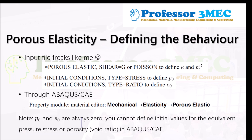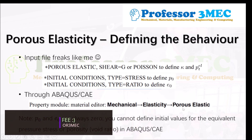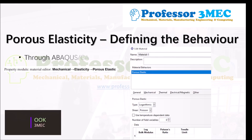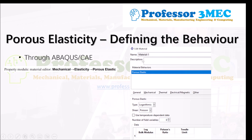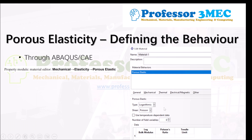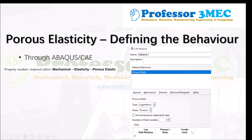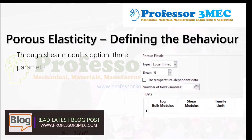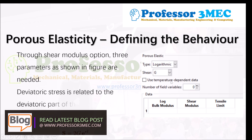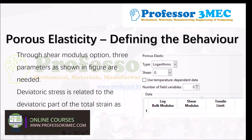To define porous elasticity through CAE: go to Mechanical → Elasticity → Porous Elastic in the material model. When you select this option, a window will pop up as shown on screen. You can define the material name and select porous elastic options. If you select the Poisson's ratio option, you need to define the logarithmic bulk modulus, Poisson's ratio, and the tensile limit. If you select the shear option (G), then you define the logarithmic bulk modulus, shear modulus, and tensile stress.